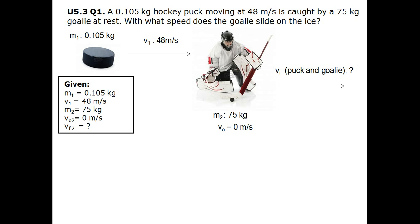Here is the given. As we can see, this is a conservation of momentum question. Whenever we encounter these types of questions, the before equals the after, which also means p1 plus p2 equals p1 plus p2. We can further expand this by saying mass 1 times initial velocity 1 plus mass 2 times initial velocity 2 equals mass 1 times final velocity 1 plus mass 2 times final velocity 2.